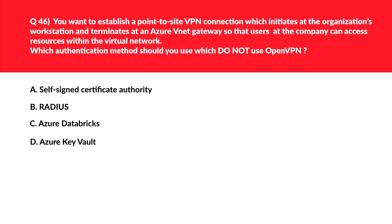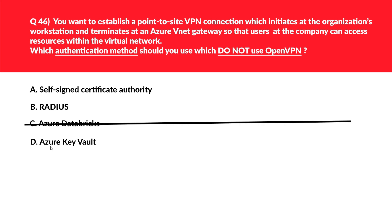This question is related to point-to-site VPN and authentication methods. Let's first look at option C, that is Azure Databricks. Databricks is a data analytics platform which uses SQL — it is in no way an authentication method as required here in the question. Therefore it's an incorrect choice. Option D says Azure Key Vault. Key Vault is used to encrypt keys and passwords, but has nothing to do with establishing a secure connection as required here. Again an incorrect choice.